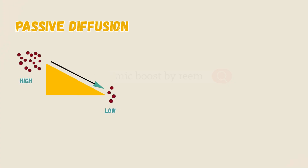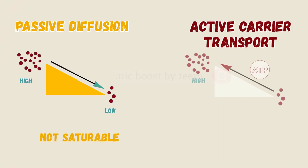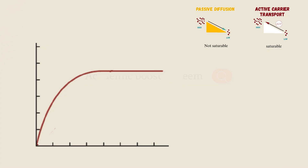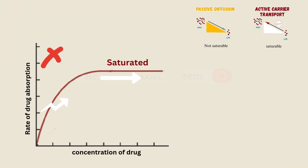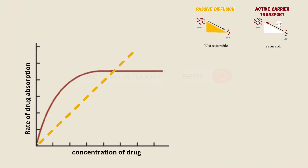Notice that for a drug absorbed by passive diffusion, the process is not saturable, while in active transport it is. Looking at the curve between drug concentration and rate of drug absorption: at first, the rate of absorption increases with increasing drug concentration until carrier molecules are completely saturated, with no further increase in the rate of absorption — this occurs in active carrier transport. In passive diffusion, the rate continues to increase with increasing drug concentration.